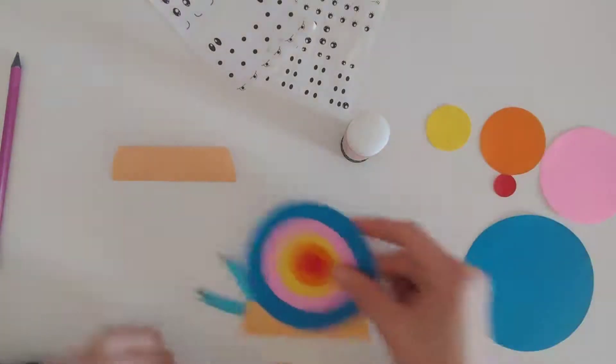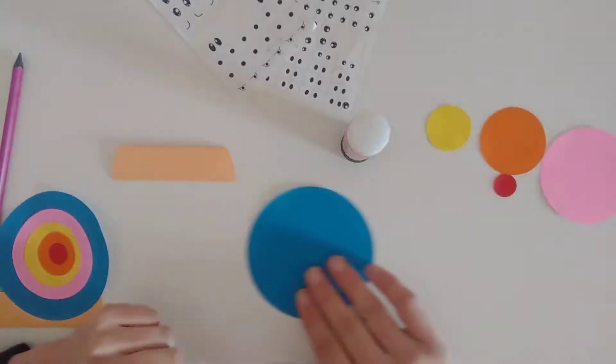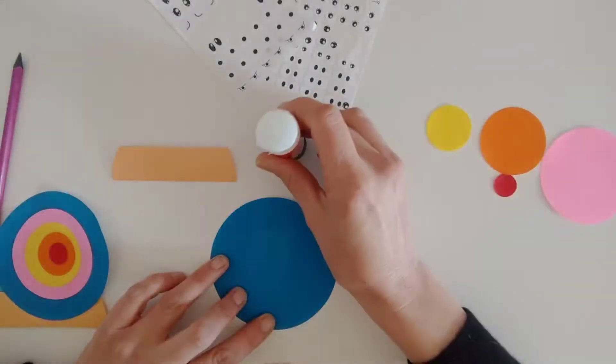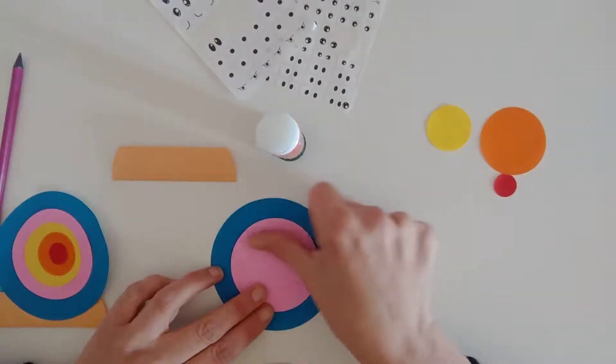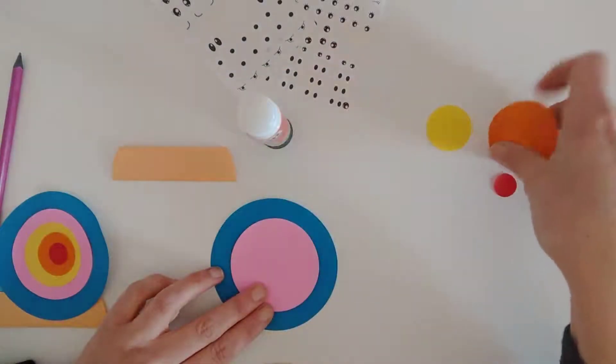Now we make the shell. I take the very big circle and put the glue on it. A big circle. More glue.